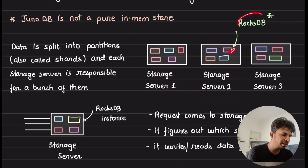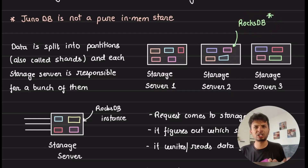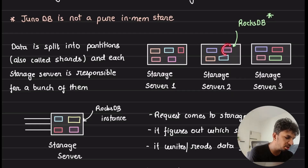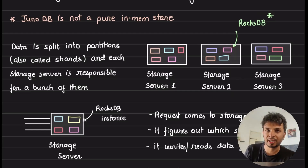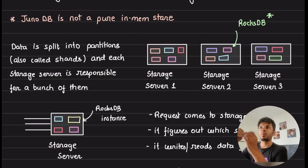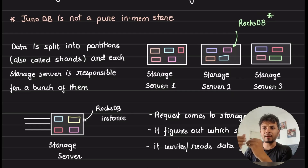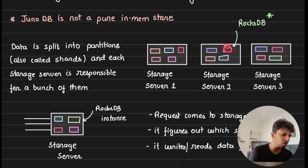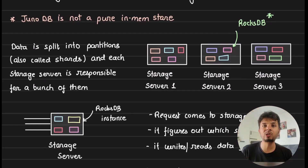Each shard is an instance of RocksDB, a very popular embedded database. Because you are storing key-value pairs, why would you want to rewrite your own storage layer unnecessarily? If a solution like RocksDB already exists, you just use that. They use RocksDB to store the actual raw key-value pairs.